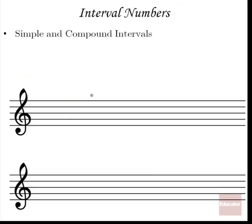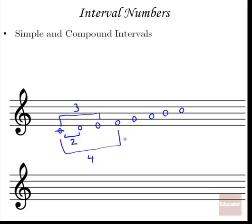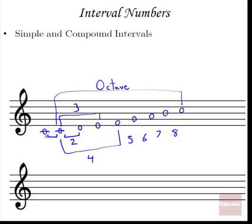There are different kinds of intervals, and the simplest way to classify them is by using numbers. In a C major scale, we can find the different numbers by finding the intervals all from the root note C. So C to D is some kind of second, C to E is a third, C to F is a fourth, and so on — fifth, sixth, seventh — and C to C is what we call an octave. C to C on the same line is a unison.